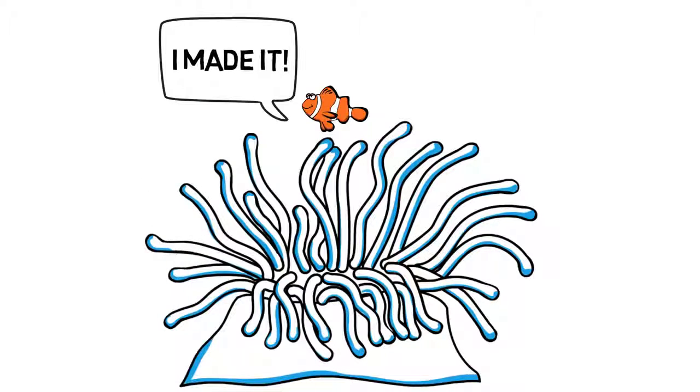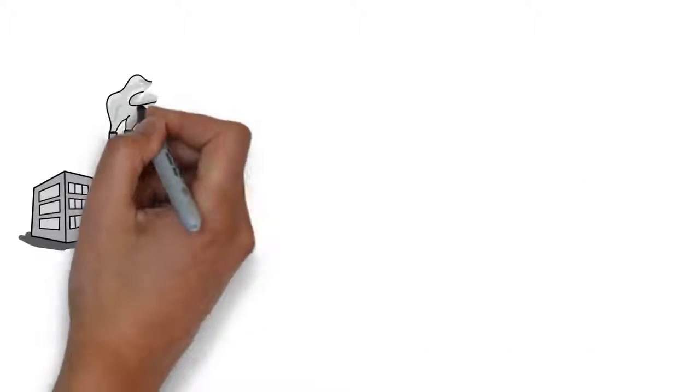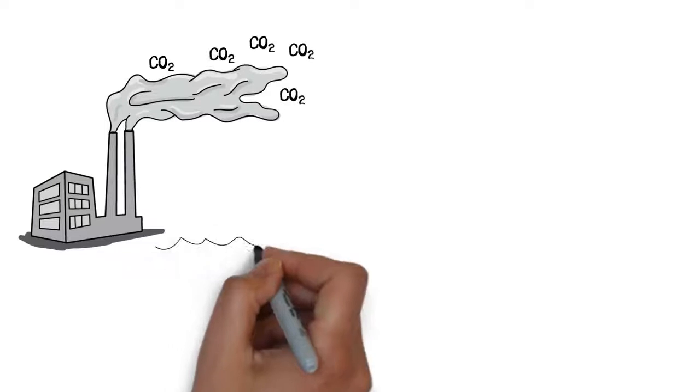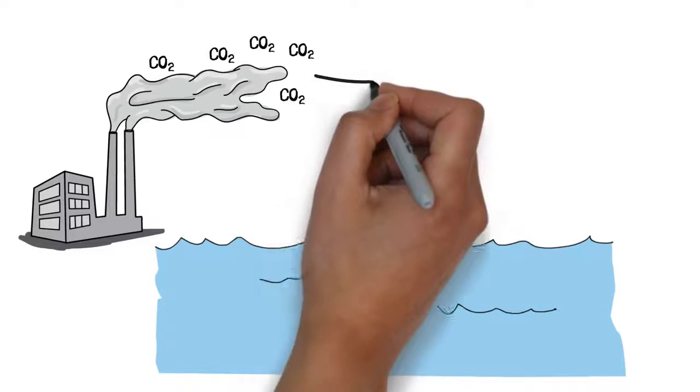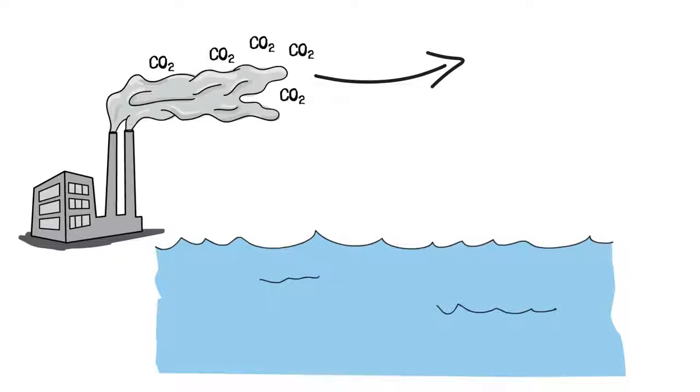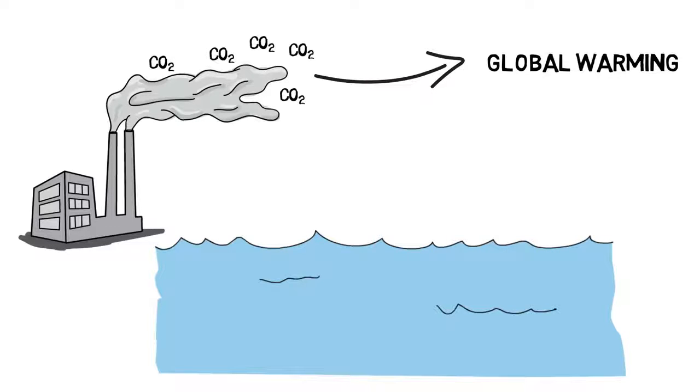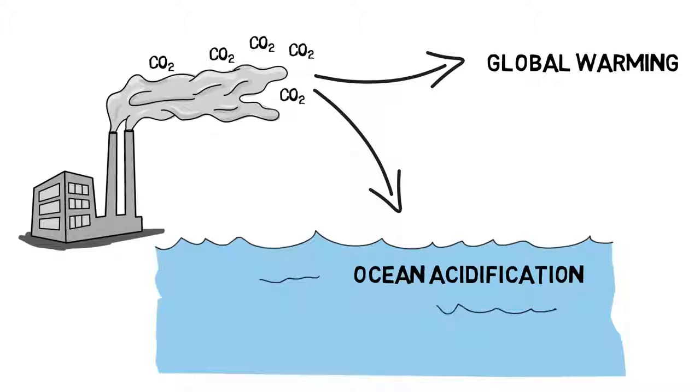But there is a problem. A problem that could put Nemo in danger. Far, far away from the reef, humans are burning fossil fuels like there is no tomorrow. All the carbon that humans release in the air not only makes the planet warmer but also dissolves in the ocean making it more acidic in a process called ocean acidification.